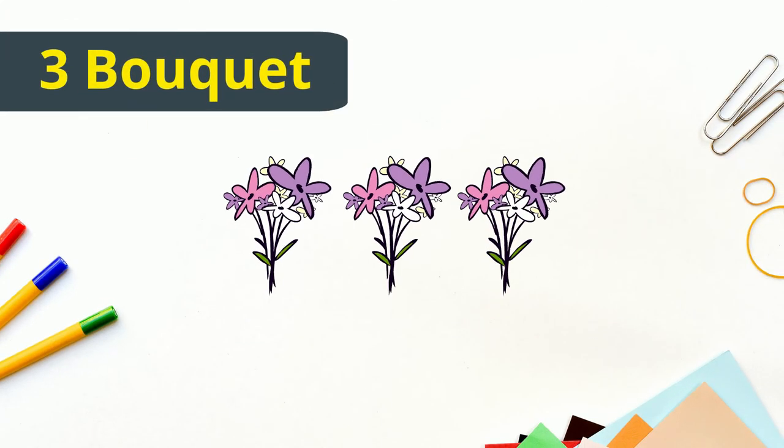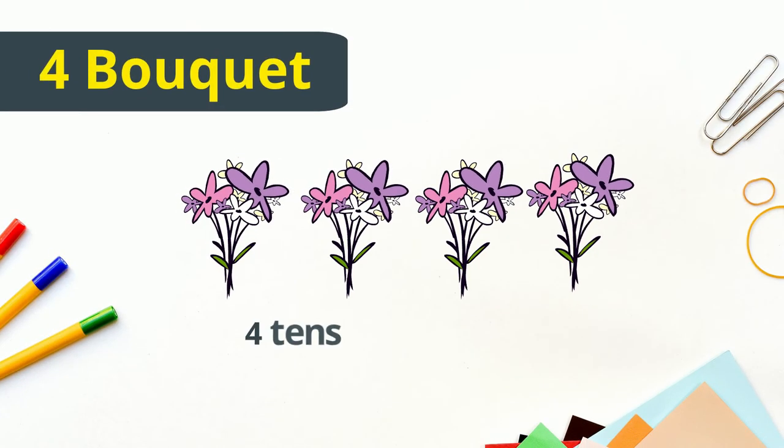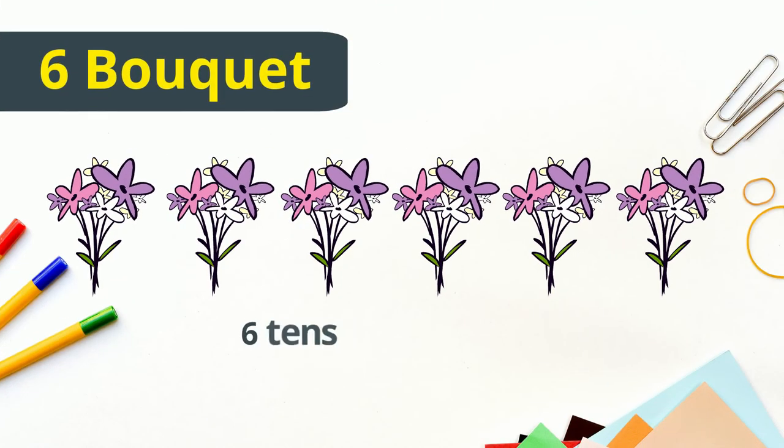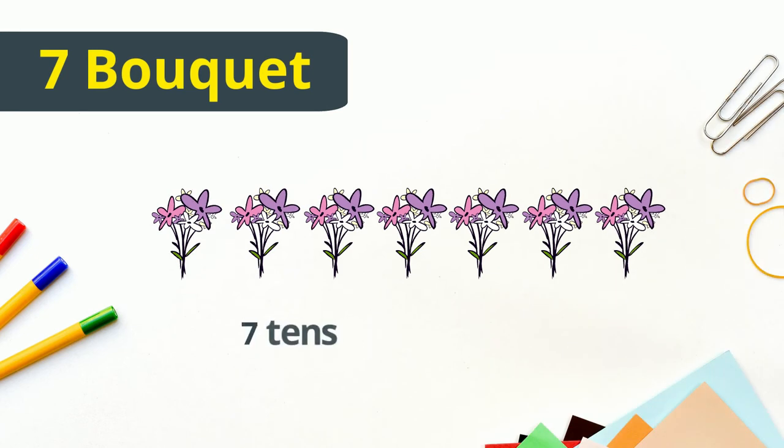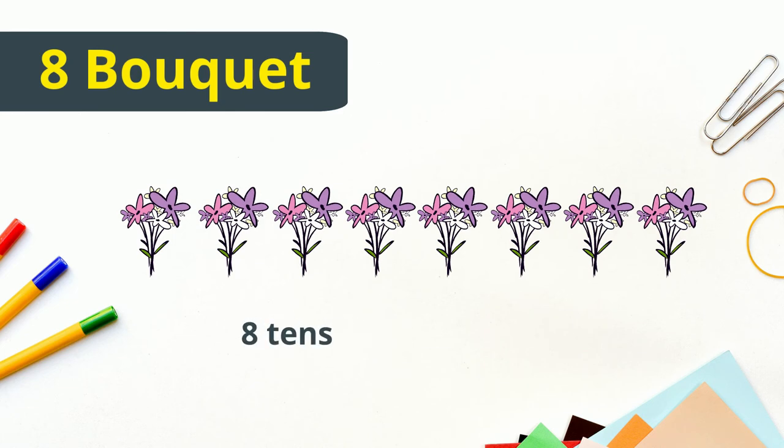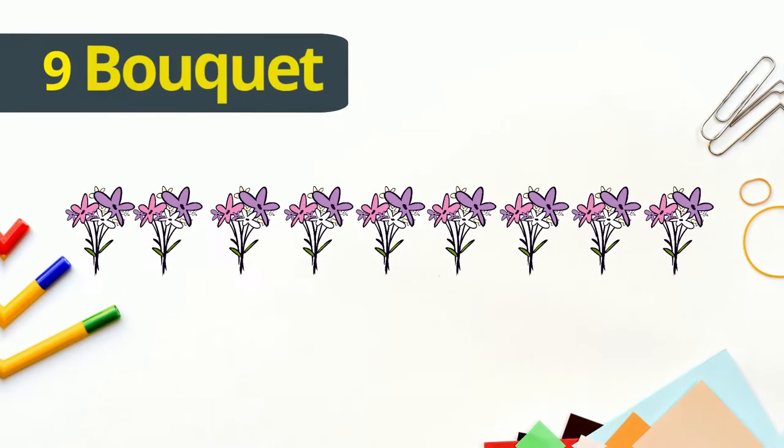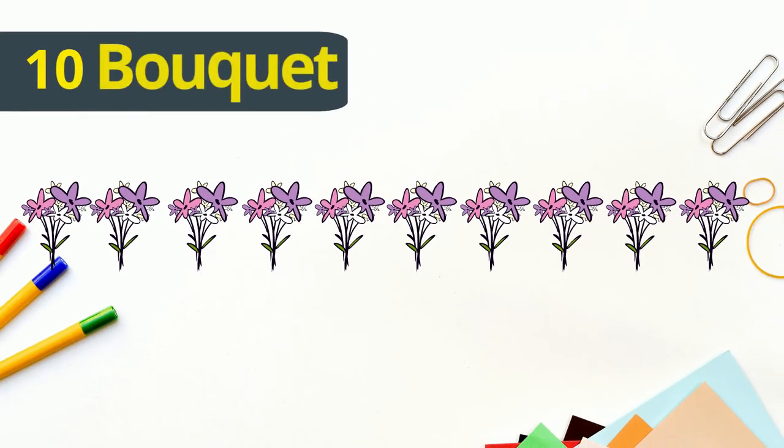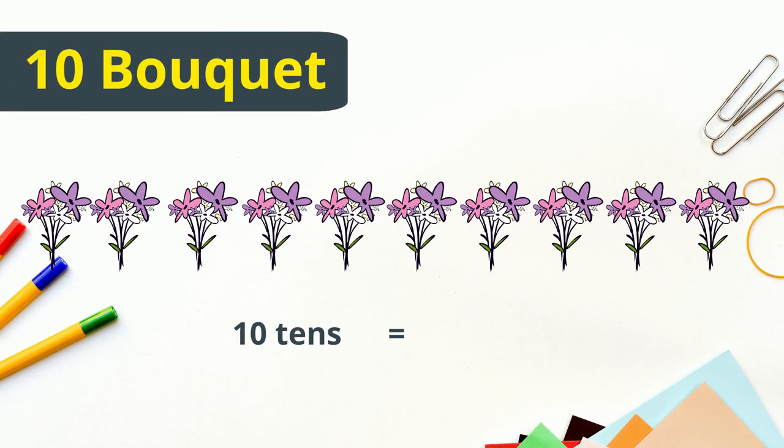Three tens mean thirty flowers, four tens mean forty flowers, five tens mean fifty flowers, six tens mean sixty flowers, seven tens mean seventy flowers, eight tens mean eighty flowers, nine tens mean ninety flowers, and ten tens mean one hundred flowers.